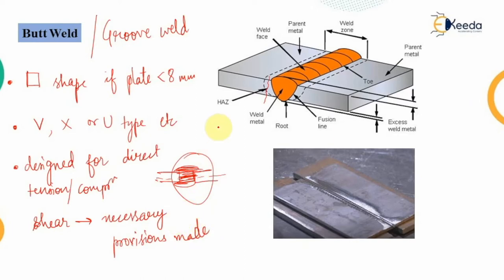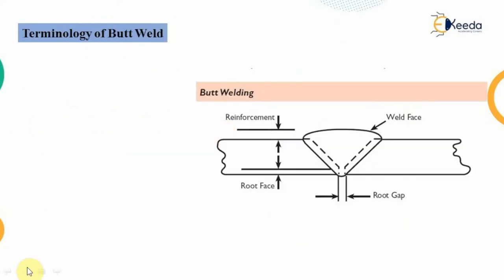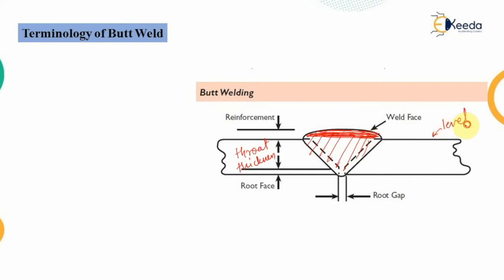Now we will look at certain specifications and terminology involved in designing butt welds. Consider two members connected with a butt weld. The portion of the butt weld forming the V-shape from plate to plate is known as the throat thickness of the butt weld. The top portion — the material provided above the level of the plate — is not used in the calculation of design strength.